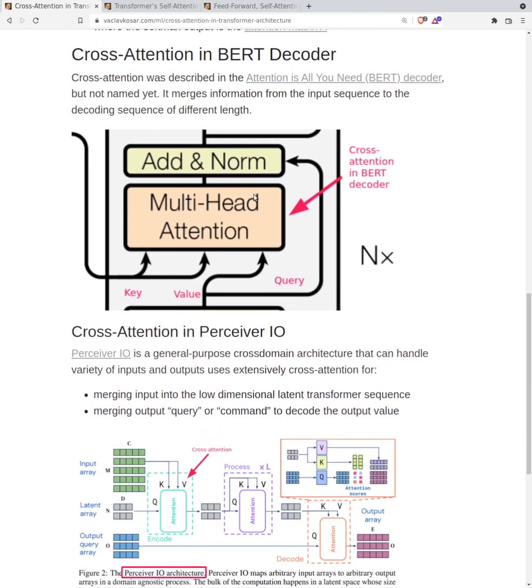For examples, we can have a look. In the BERT decoder, in the original attention is all you need paper, cross attention is used in the decoder. The input sequence from the encoder is passed into the cross attention, and the query is the decoding sequence.